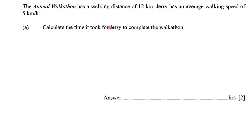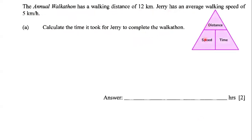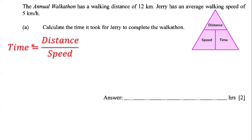The question is asking us for the time it took for Jerry to complete the walkathon — so we're looking for time taken. We're going to use our speed-distance-time triangle. Based on this triangle, if we want to figure out the time taken, we have to take the distance and divide it by the speed. So the time taken is going to be distance divided by speed.